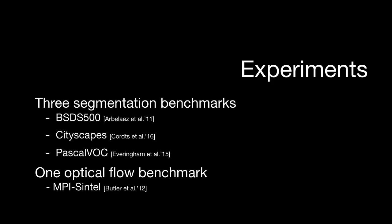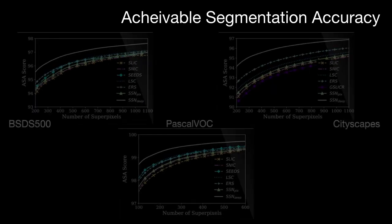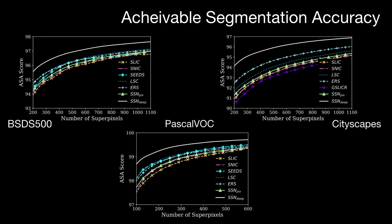We conduct experiments on three different segmentation benchmarks and one optical flow benchmark. Here we show the achievable segmentation accuracy scores of different superpixel techniques on different datasets. The ASA score of our SSN technique, shown in solid white curves, indicates that SSN performs favorably against other techniques on all the datasets.